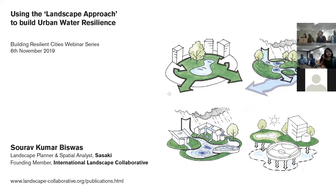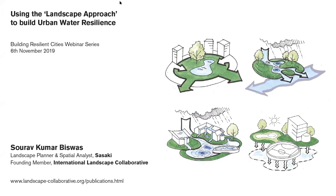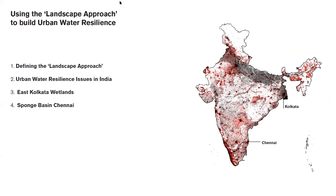Today I'm going to be talking about urban resilience in terms of the concept of the landscape approach. I'll be talking about the landscape approach that is particularly more spatial and more ecological in its thinking. I've structured my presentation to first define the landscape approach, then give a broad overview of urban water resilience at the national scale, and then zoom into two different case studies, following multiscalar implications that we should all be aware of as we engage with the idea of resilience.